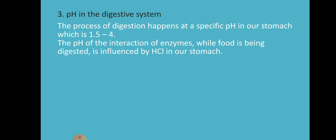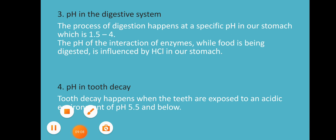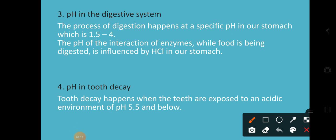Another example is tooth decay — cavity in our teeth. Tooth decay happens when the teeth are exposed to an acidic environment. The pH around 5.5 and below is considered an acidic environment that causes tooth decay. So if you have a cavity in your teeth, the pH is acidic in nature. These are some examples of the applications of pH.